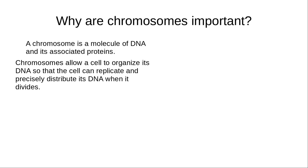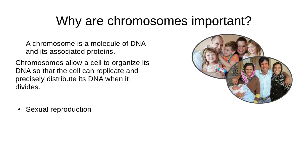Have you ever looked at a family photograph and wondered why some features are shared among some family members, but not others? For organisms that reproduce sexually, the way in which individuals inherit chromosomes from their parents is responsible for the variation that you see among offspring. Chromosomes contain the hereditary information that is passed on from one generation to the next.